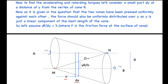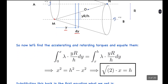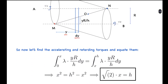To find the accelerating and retarding torques, consider a small element dy at distance y from the vertex of cone B. Since the two cones are pressed uniformly against each other, the force is uniformly distributed along the slant length — so df/dy equals lambda, a constant. The small friction force df acts tangentially, and the torque contribution is lambda times yr/h dy. Integrating from 0 to x gives the accelerating torque, and from x to h gives the decelerating torque.